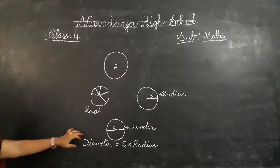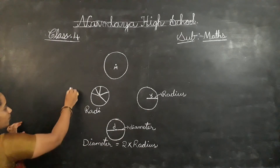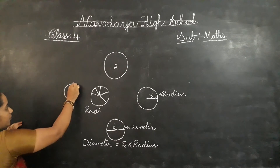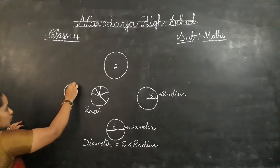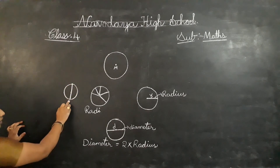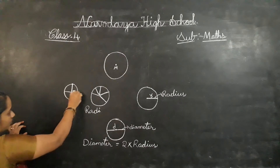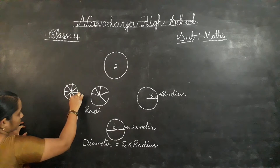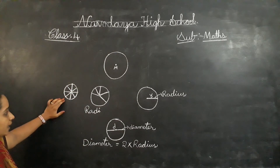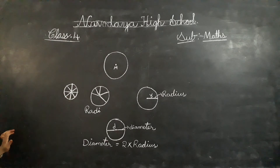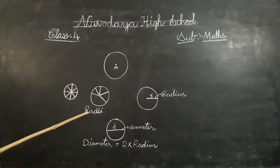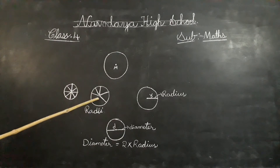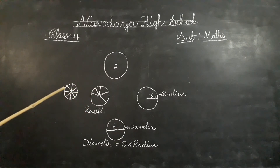You can draw many diameters also. The plural form of radius is radii, and we can draw as many radii as we like. A circle can also have as many diameters as we like.